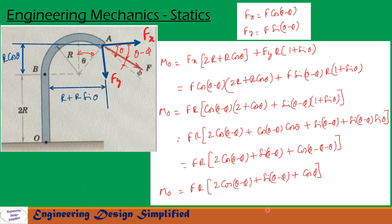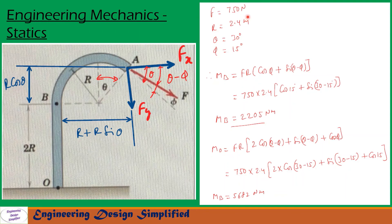Comparing the two equations, the difference between M_O and M_B is 2r·cos(θ - φ). Now applying the given values — F = 750 N, r = 2.4 m, θ = 30°, φ = 15° — and substituting into the expression for M_B, we get M_B equal to 2205 newton-meters. Similarly, substituting into the expression for M_O, we get M_O equal to 5682 newton-meters.